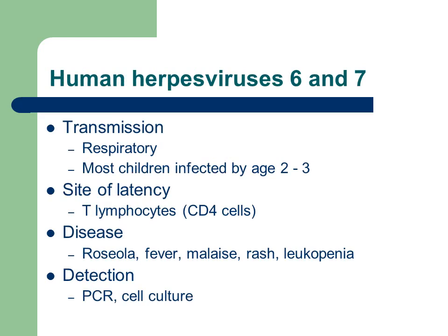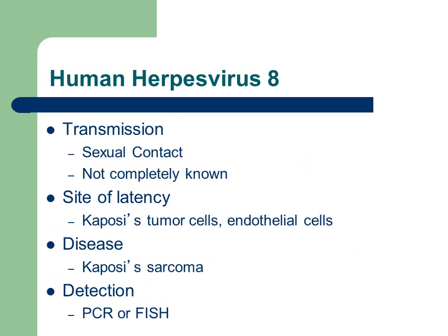Human herpes viruses 6 and 7 are transmitted through the respiratory route. Most children are infected by the age of 2 or 3. These viruses remain latent in the T lymphocytes, specifically in the CD4 cells. Human herpes virus 6 and 7 can cause roseola, fever, fatigue, rash, and low white blood cell count. They are usually detected through cell culture or PCR.